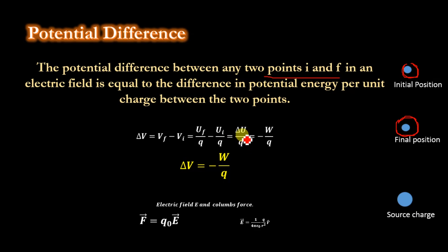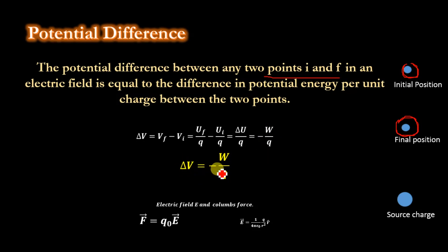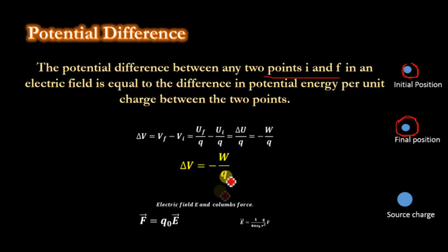The potential difference equals the change in potential energy divided by charge Q. In terms of work, it is the negative work done per unit charge. So the potential difference delta V equals minus W divided by Q, where the potential was W-infinity divided by Q.